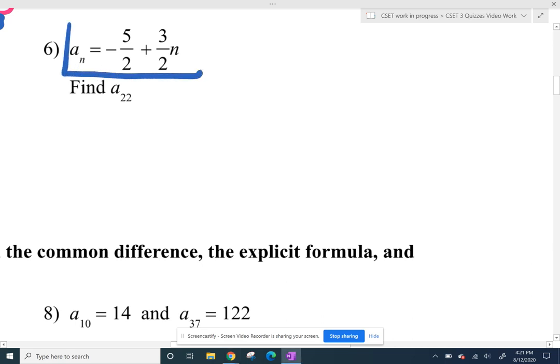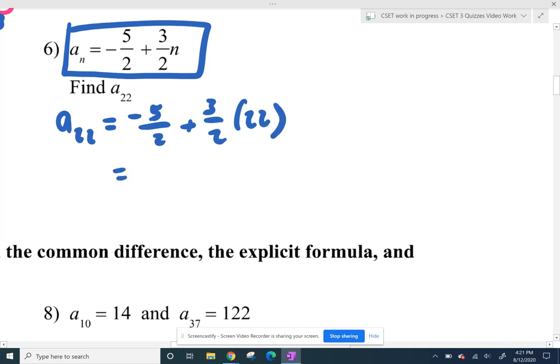All right. So they give us this explicit formula. If we want our 22nd term, we can just plug in 22 for our n and get our answer right away. You have to wade through some fractions. Negative 5 halves plus 66 halves gives you 61 halves. That's your 22nd term.